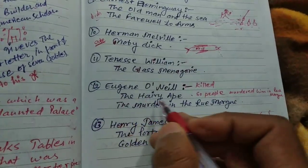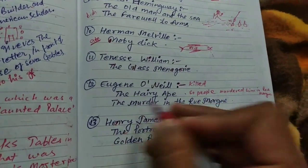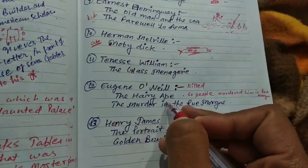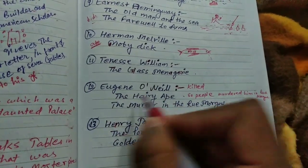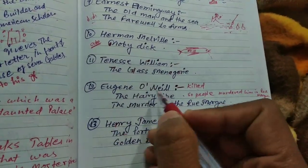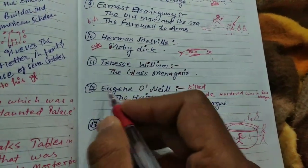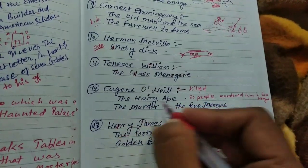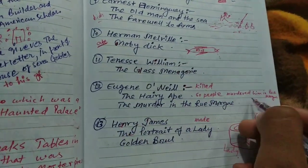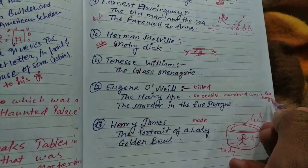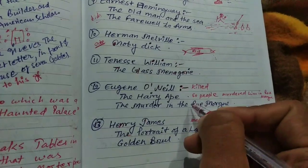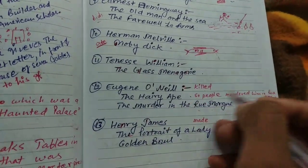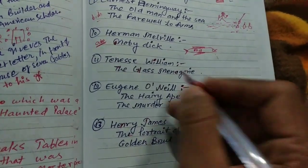Eugene O'Neill killed the hairy ape. So people murdered him — you can imagine that. Eugene O'Neill killed the hairy ape.